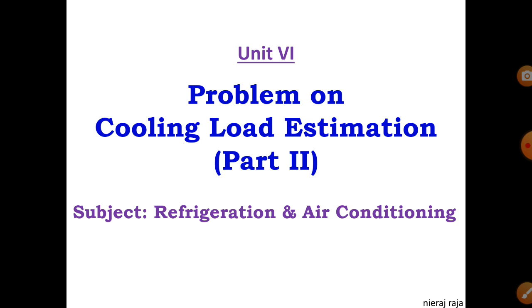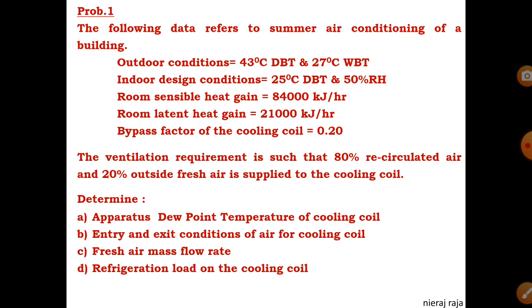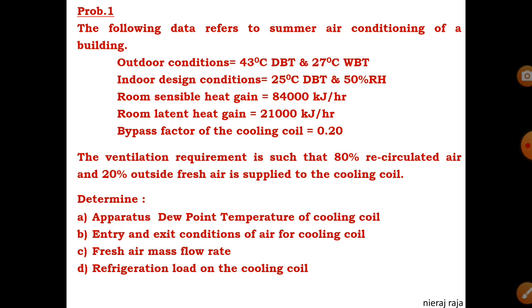Let us begin with problem number one. The following data refers to summer air conditioning of a particular building. Outdoor conditions are 43 degrees Celsius DBT and 27 degrees Celsius WBT. Indoor conditions are 25 degrees Celsius DBT and 50% RH. The outdoor condition is the ambient condition for summer air conditioning, and the indoor comfort conditions required in the room are 25 degrees Celsius DBT and 50% RH.